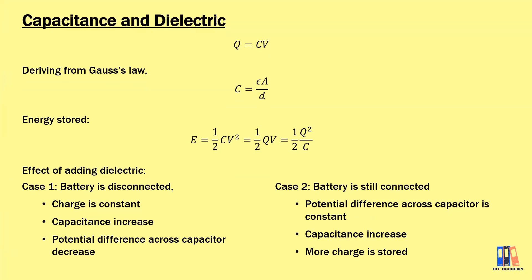First is Q = CV, that is the default formula, the first formula that we have learned in these chapters. And from the Gauss law, we use the Gauss law to derive the capacitance of a capacitor which is given as epsilon A over d.